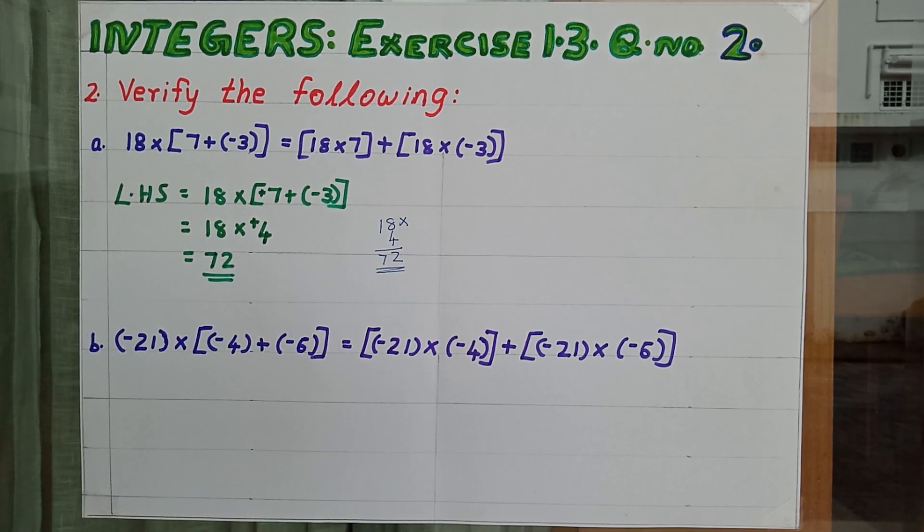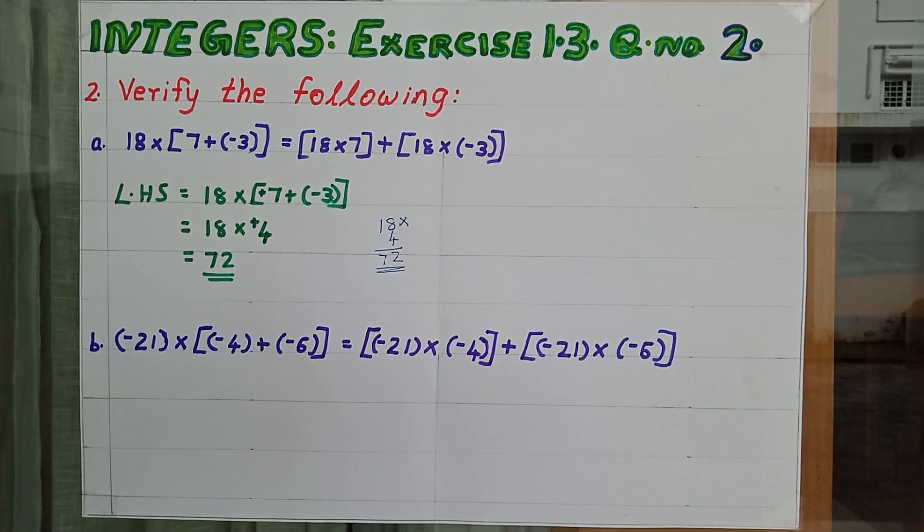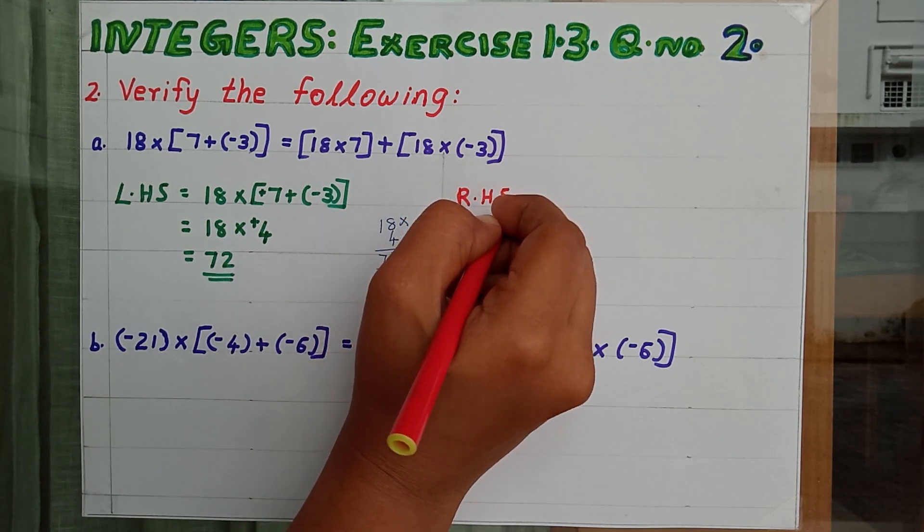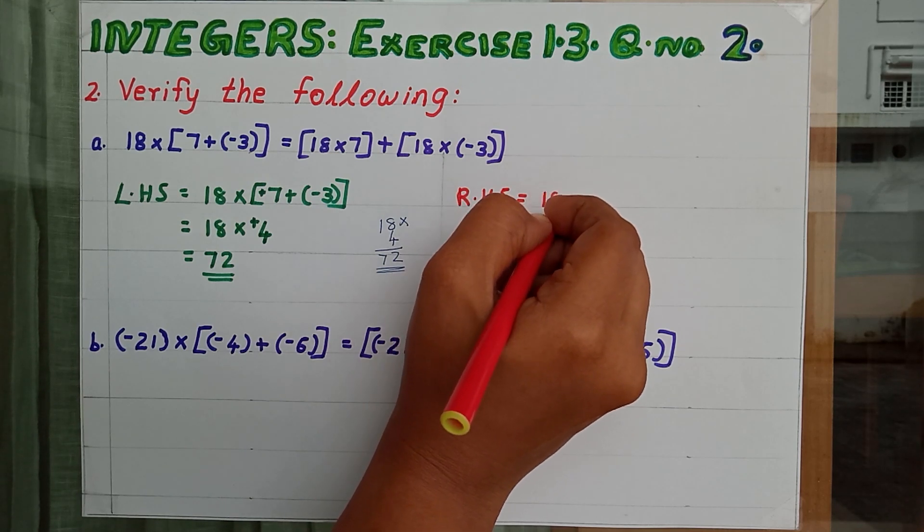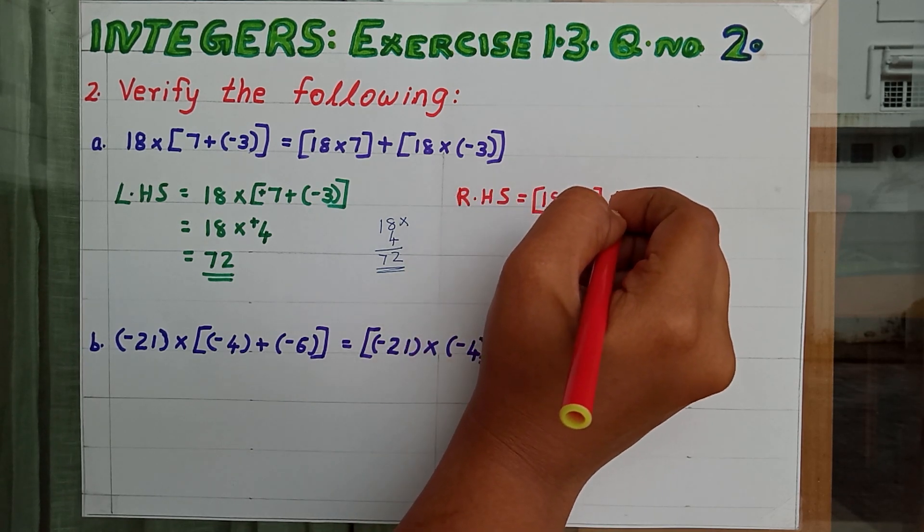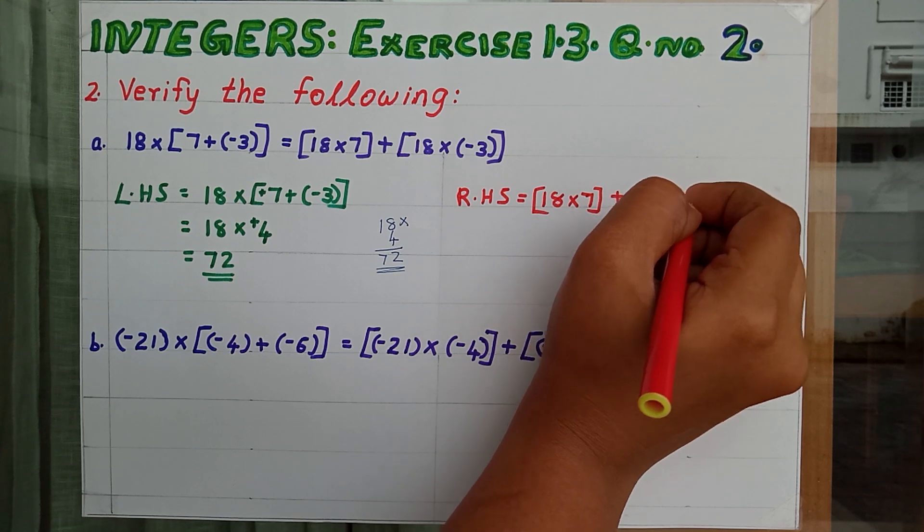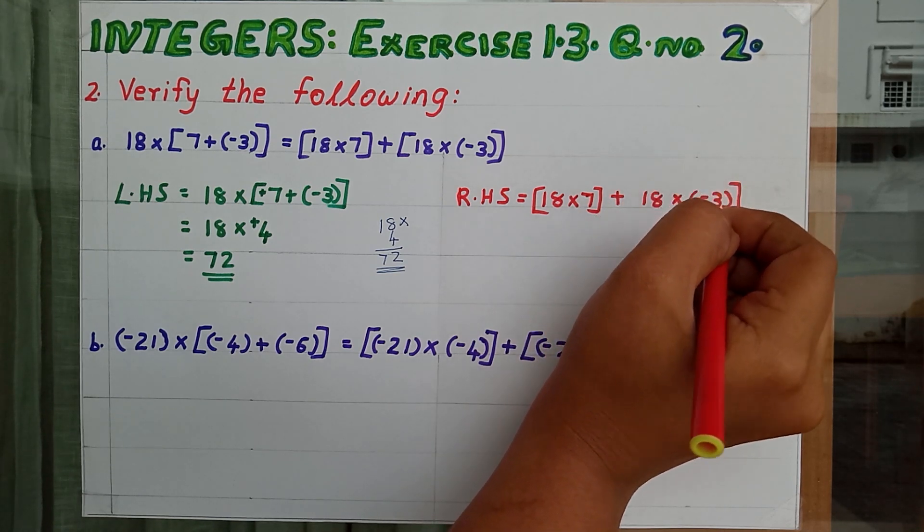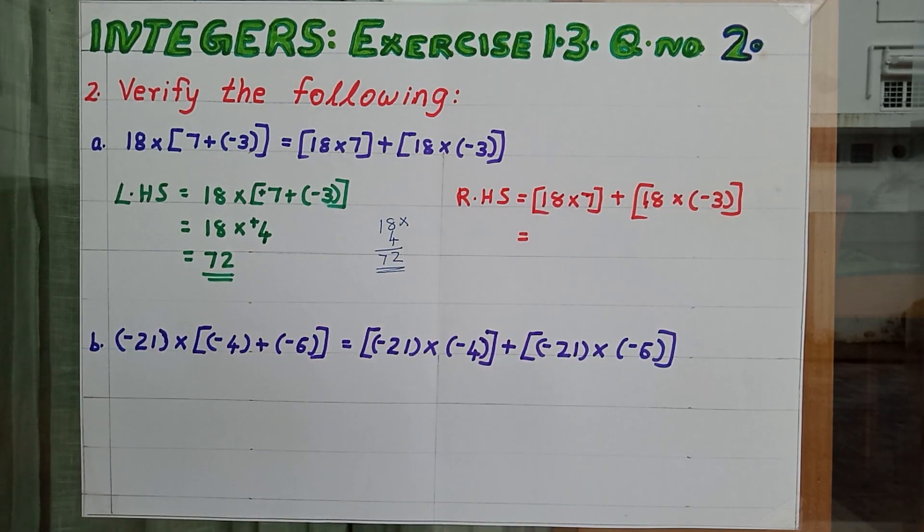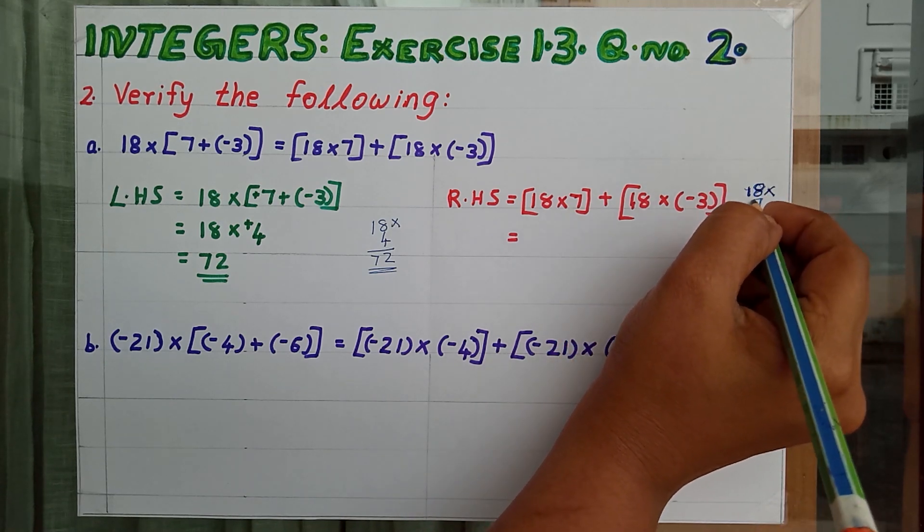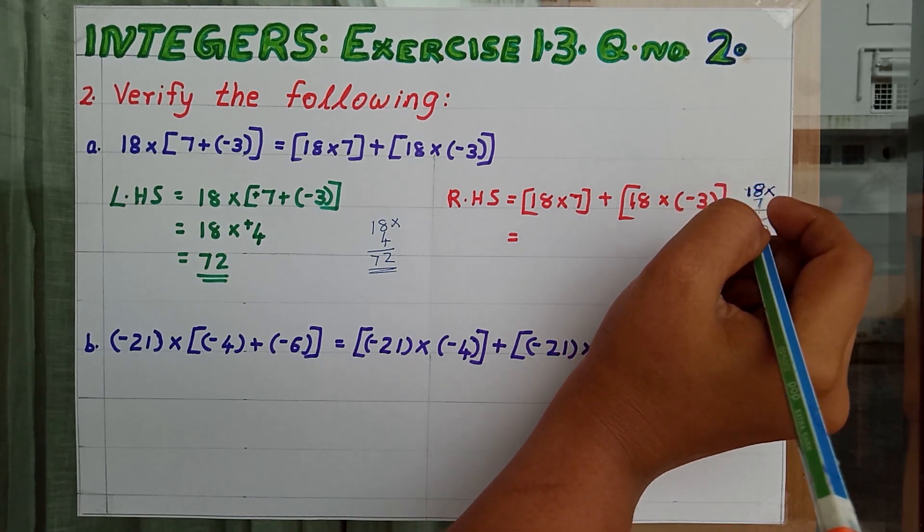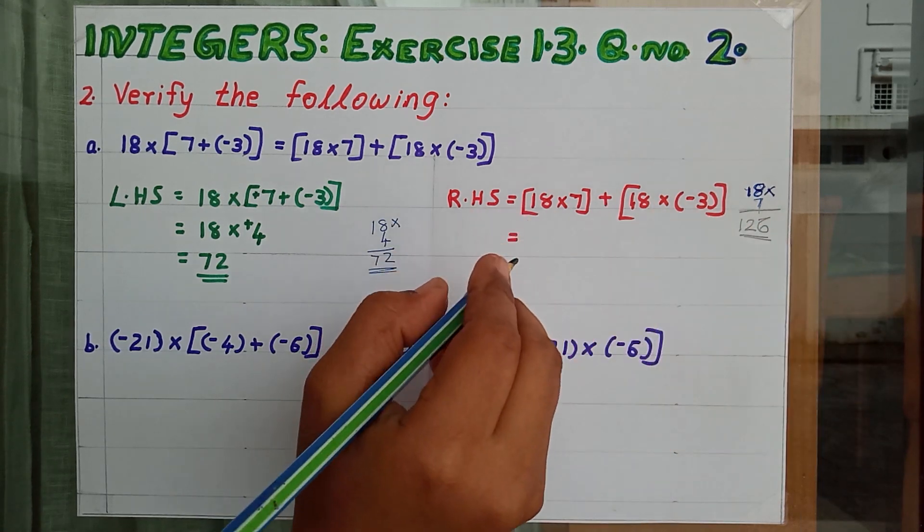Then we are going to find out what is the value of RHS. What is RHS? RHS equal to 18 into 7. Then put it in a bracket.